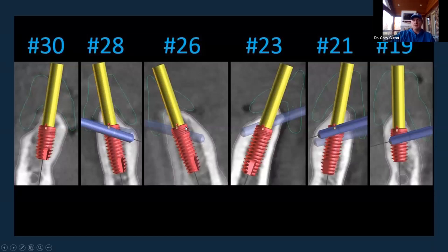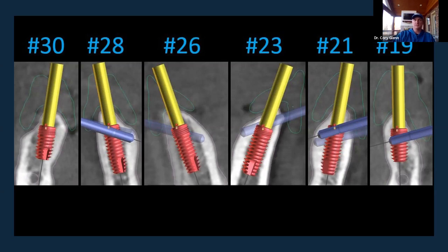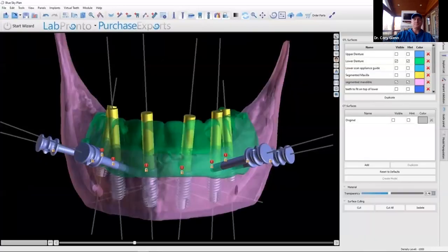My general rule: if implants are more than five millimeters subcrestal, it probably needs to be a bone-supported guide with bone reduction. Five millimeters or less, you can still go ahead with a soft tissue guide — even four millimeters subcrestal, you can do bone reduction after the fact. Beyond about five millimeters, the wag factor of your drill means you're drilling so deep the apical end has too much deviation and you don't know where it'll end up.